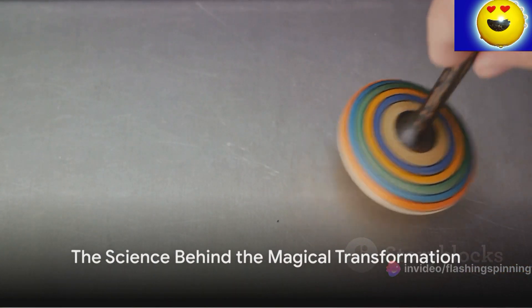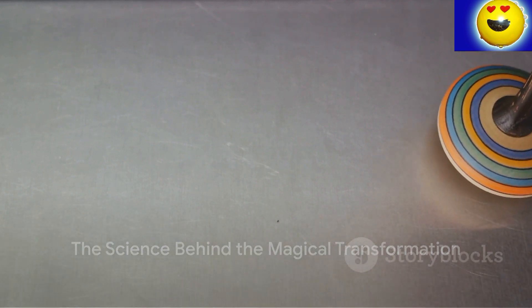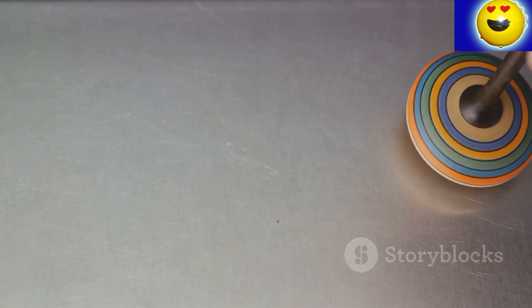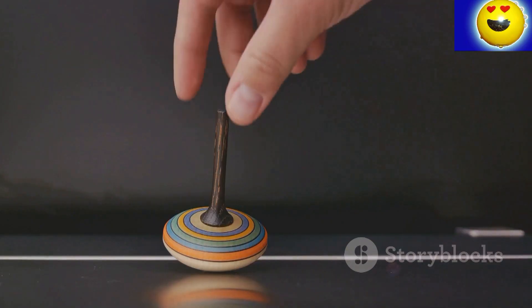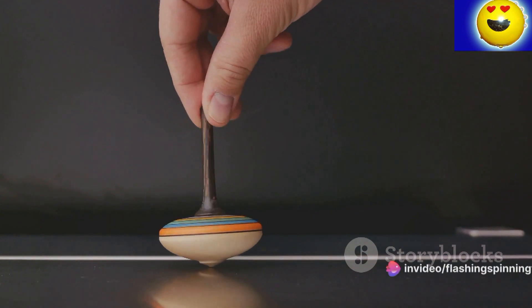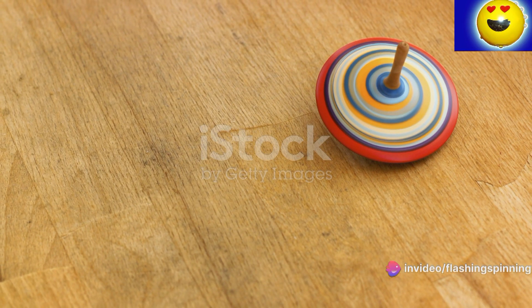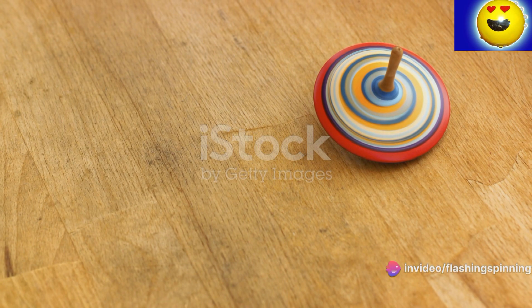The science behind this magical transformation lies in the principles of angular momentum and gyroscopic stability. When you spin a top, you're giving it angular momentum. This momentum wants to keep the top spinning in the same direction.